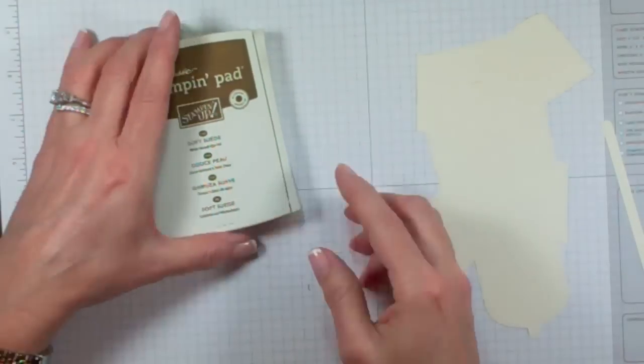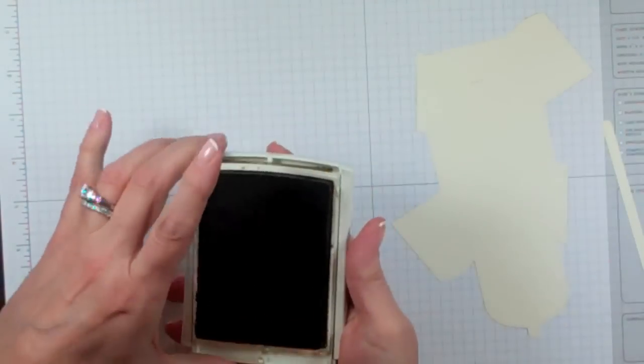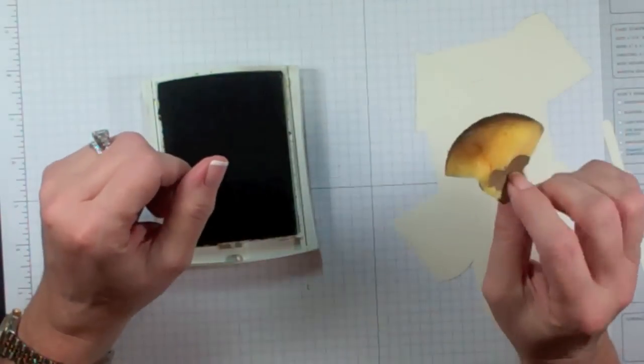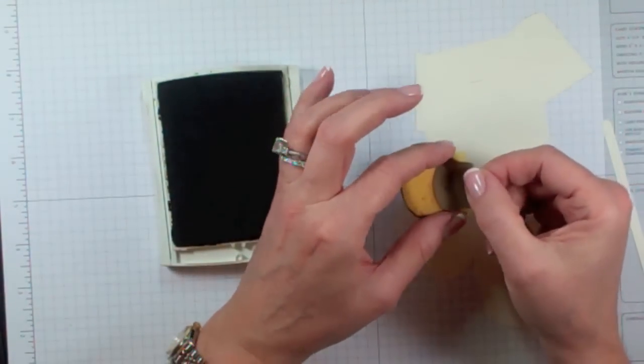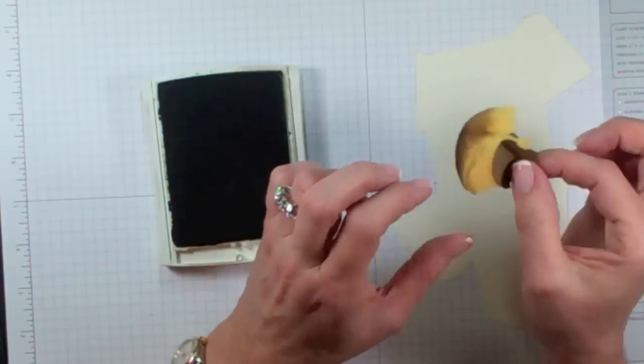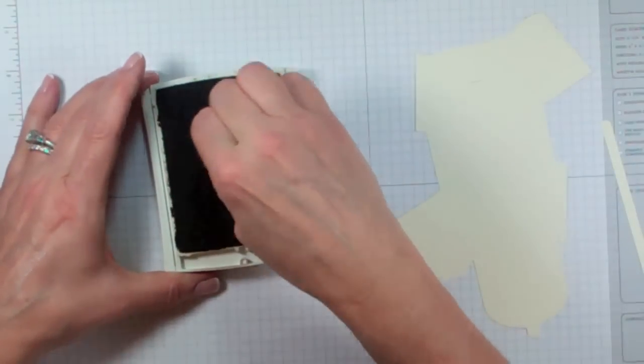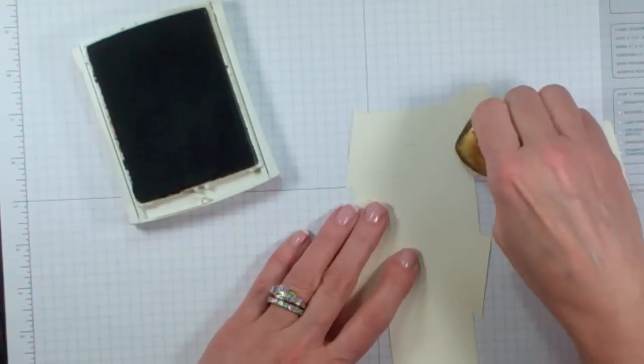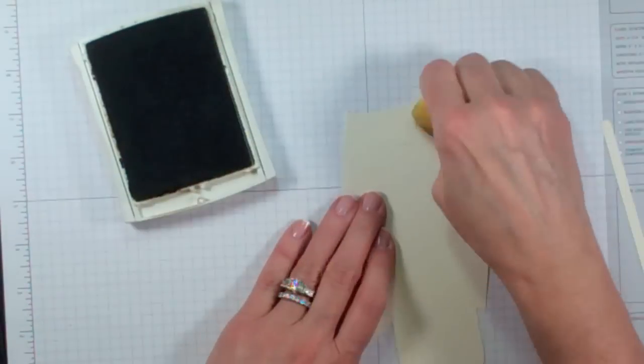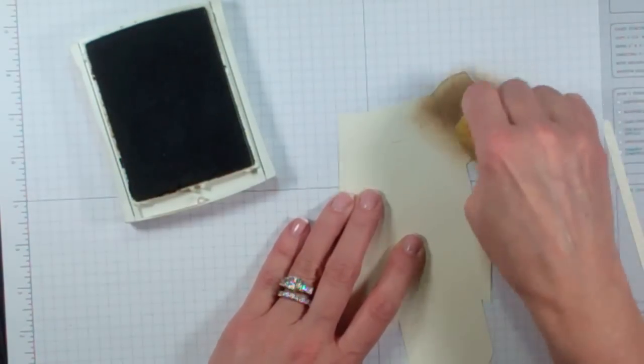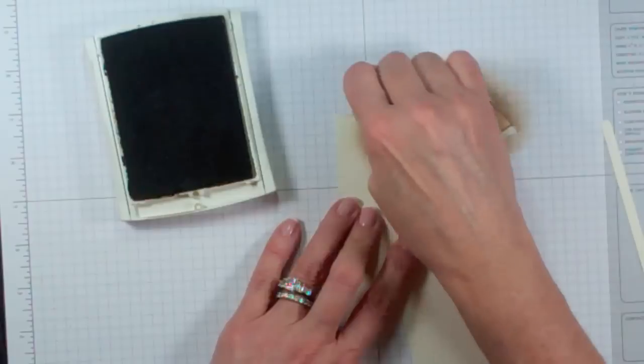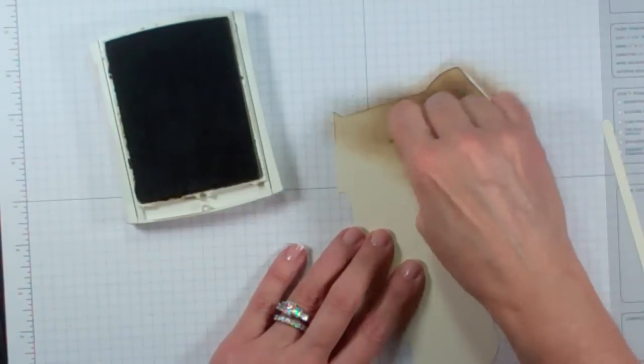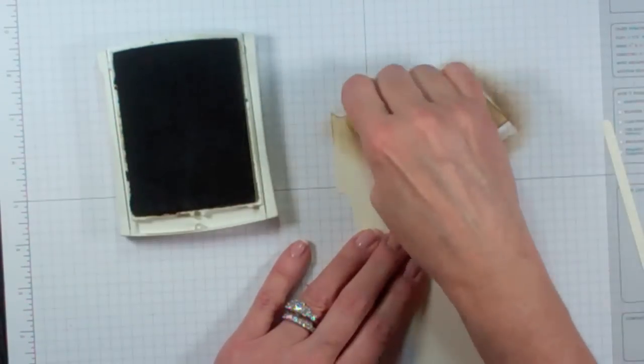We're going to use Soft Suede and one of our sponges. I've just cut a Stampin' Sponge into four and then used one of our punches to make a little punch out. I wrote the name on it and stapled it on so that I know which sponge is which. I'm just going to transfer this color on here, and you can swirl it or stamp it or however you want to get color on here. But you want to get pretty good coverage.